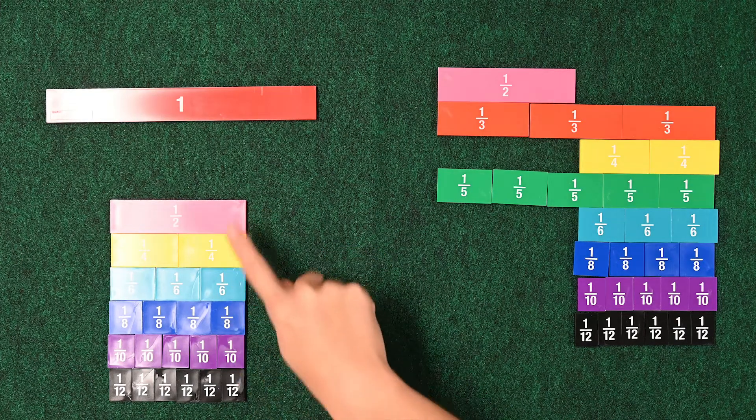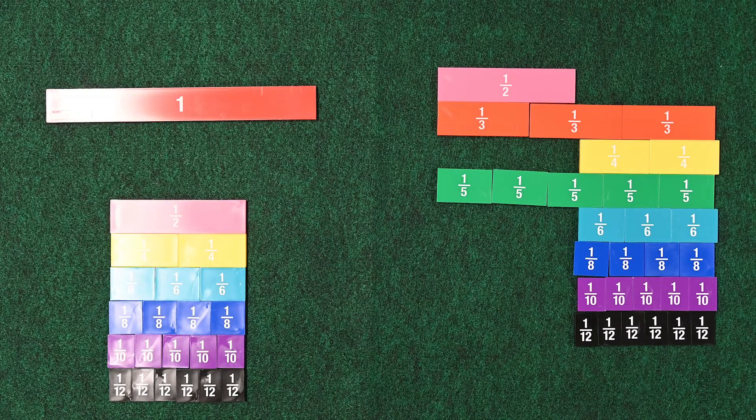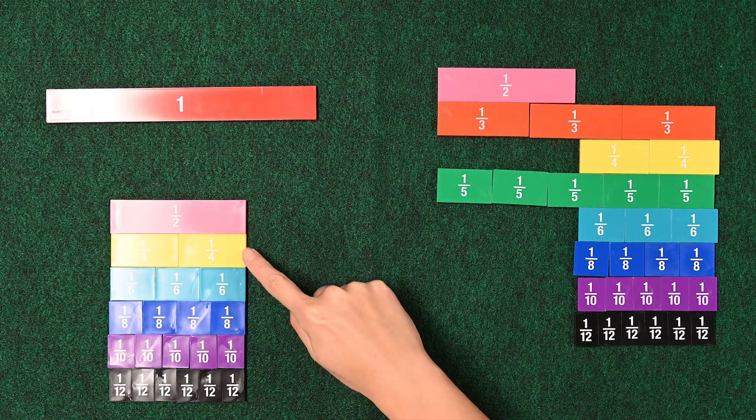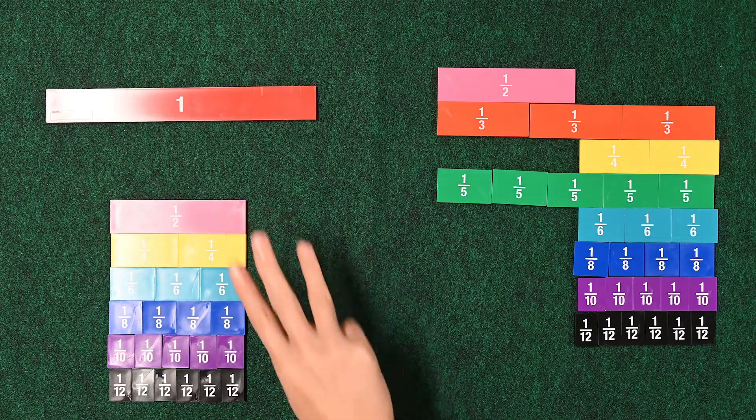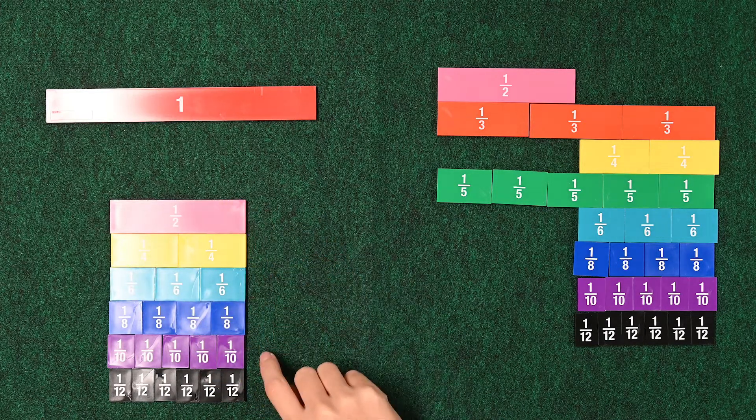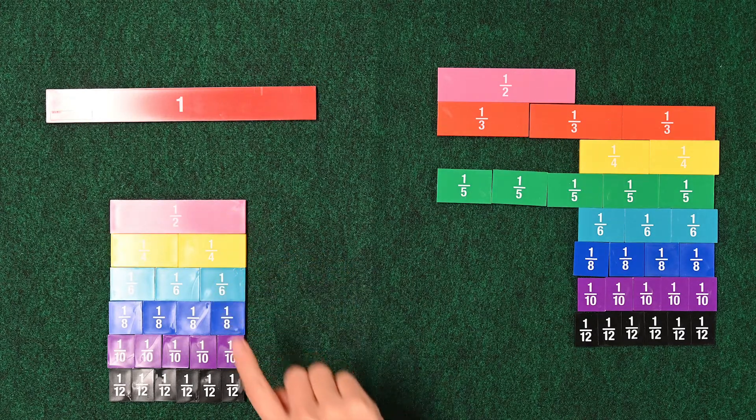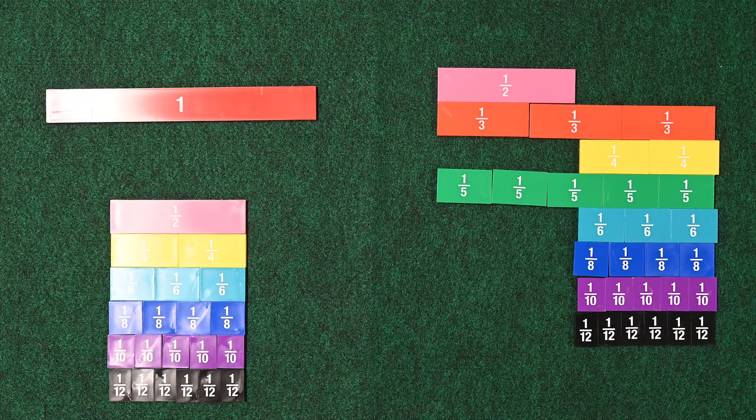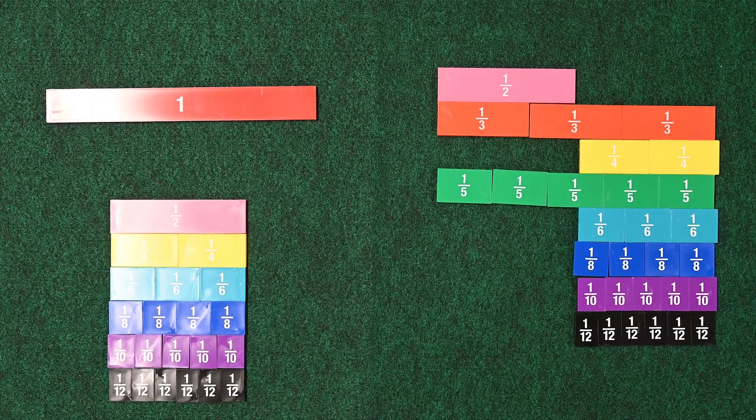So, 1 half is the same as 2 4ths. 2 4ths is the same as 1 half. 3 6ths. 4 8ths. 5 10ths. 6 12ths. And 6 12ths makes 1 half. Awesome.